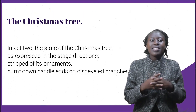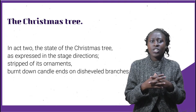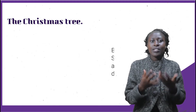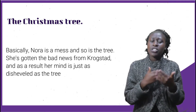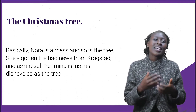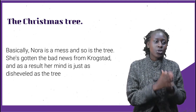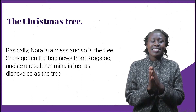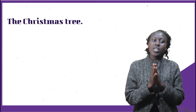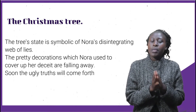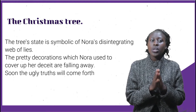Helmer uses Nora to impress himself and he even dresses her up in costumes and makes her dance for him. In Act Two, the state of the Christmas tree as expressed in the stage directions — stripped of its ornaments, burnt-down candle ends on the several branches — symbolizes Nora's psychological state. According to the stage directions, Nora is alone in the room walking about uneasily. Basically, Nora is a mess and so is the tree. She's gotten bad news from Krogstad and her mind is just as disheveled as the tree.